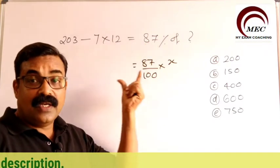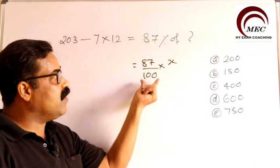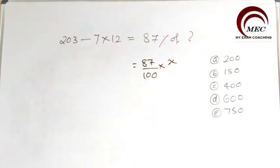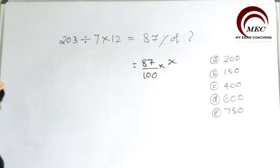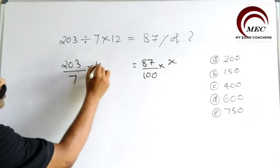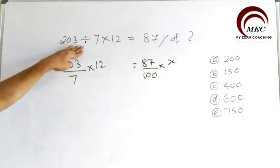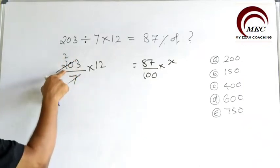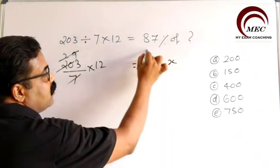You need not write all these things in your exam — do maximum calculations as mental calculations. So 203 divided by 7 multiplied by 12 equals 87 by 100 into x. How many times? 7 goes into 203: 2 times 14, giving 29. So 29 and 87 you can cancel 3 times. Then 3 and 12 you can cancel 4 times. So 4 equals x by 100.